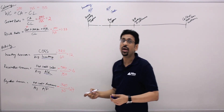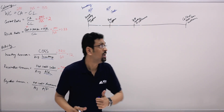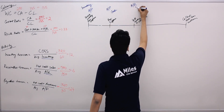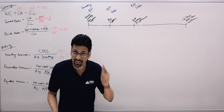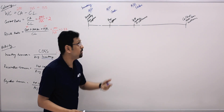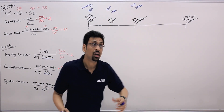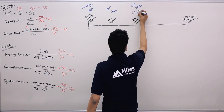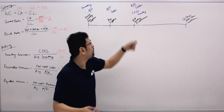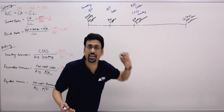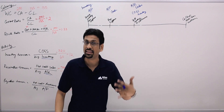When selling inventory to customers, the journal entry is: debit Accounts Receivable, credit Sales. At the same time, you pass another entry because inventory has gone out as an expense: debit Cost of Goods Sold, credit Inventory. This second entry is passed immediately if you're following the perpetual method of inventory.